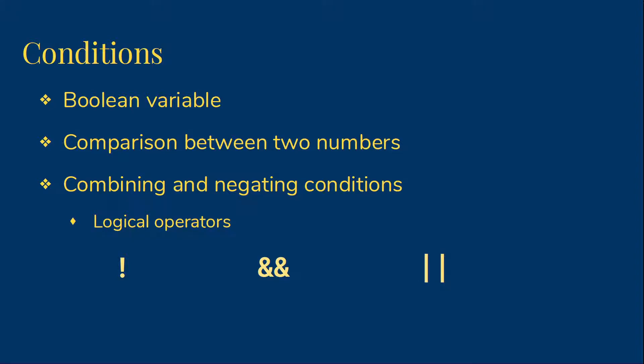Our final logical operator is OR, which is written with two vertical bars. If you're trying to find that on your keyboard, it will be shift backslash. Again, we need both of the vertical bars. OR will be true unless both sides are false. So if one of the two things is true, OR both are true, OR is true.